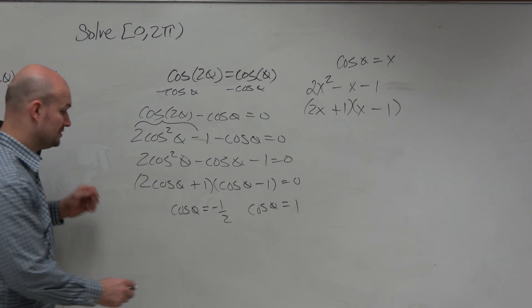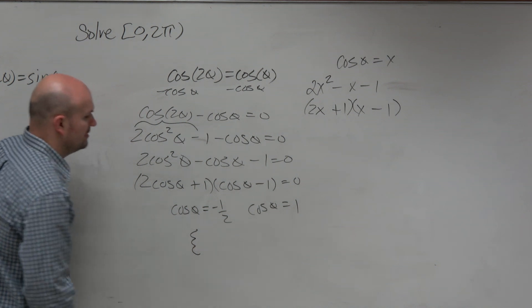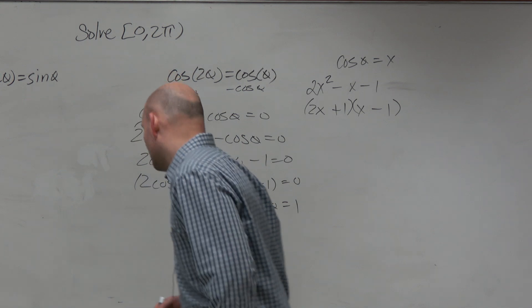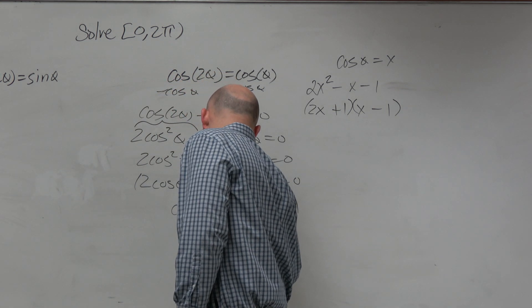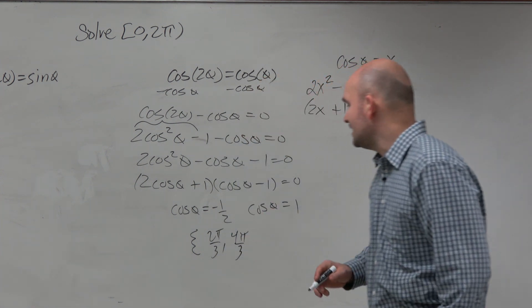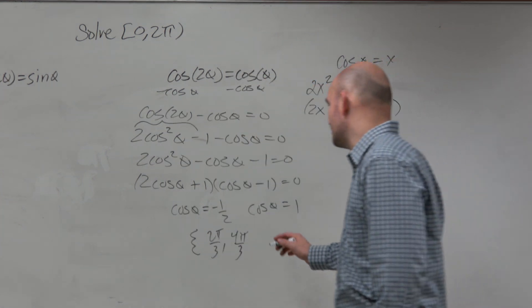And again, if you don't know your unit circle, you're going to start being left behind, guys. So I'm going to solve these. A cosine is negative in the second and the third quadrant. So that's negative 1 half. So that's going to be 2 pi over 3, 4 pi over 3. Cosine is equal to 1 at 0.